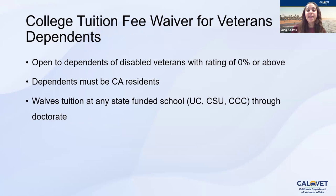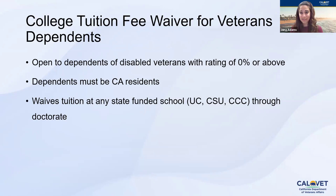CalVet offers an excellent benefit called the College Tuition Fee Waiver for Veteran Dependents. This allows dependents to attend any California Community College, State school, or UC and waive tuition and fees — from general education all the way through a doctorate. While dependents don't get a monthly stipend like veterans do with the GI Bill, the fee waiver is a significant benefit. There are four ways to qualify — plans A, B, and more — which we'll go through next.